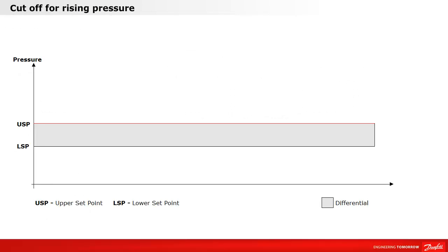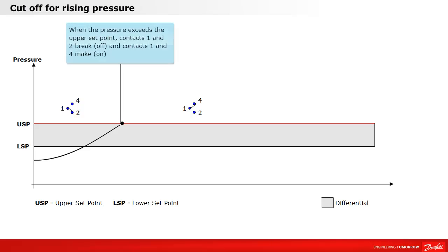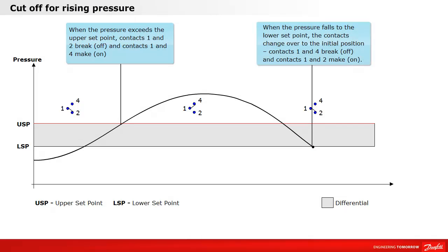Let's take a look at the cutoff for rising pressure. When the pressure exceeds the upper set point, contacts 1 and 2 break and contacts 1 and 4 make. When the pressure falls to the lower set point, the contacts change over to the initial position — contacts 1 and 4 break and contacts 1 and 2 make.